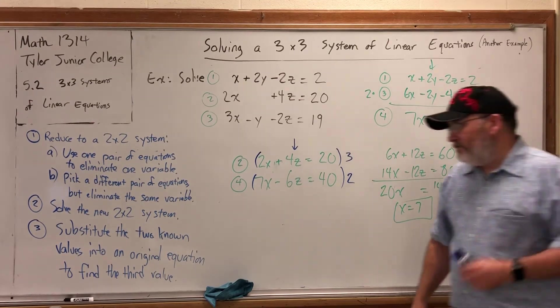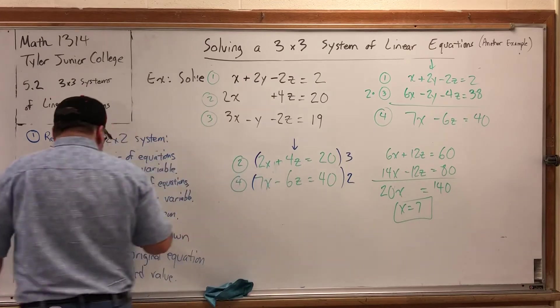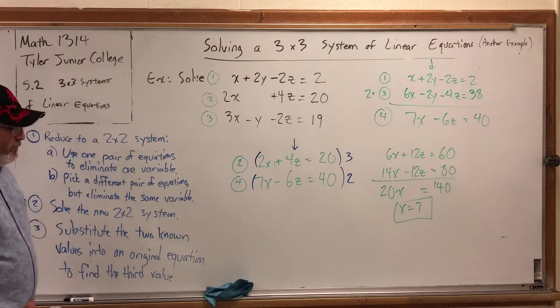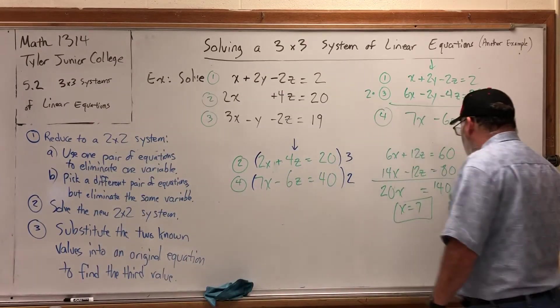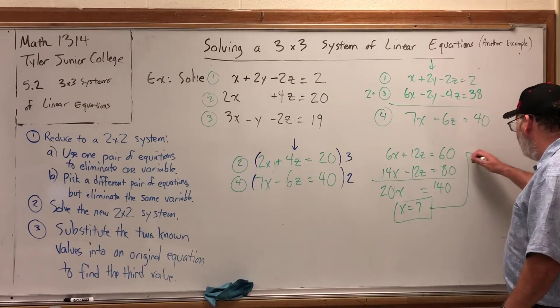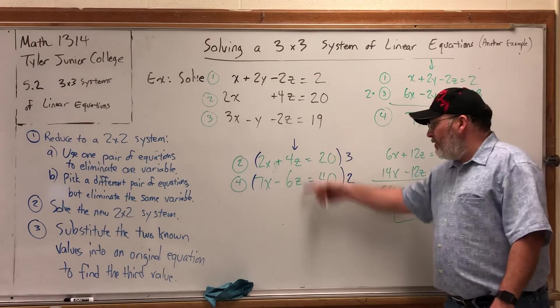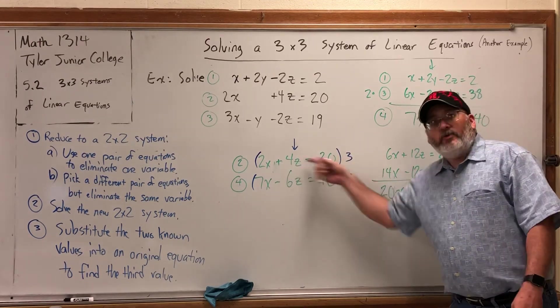Be careful. We haven't finished step 2. Solve the 2x2 system. So we need to find the other variable down here. We need to find z. So let's take x equals 7 and put it into either of these equations. Let's just use equation 2.